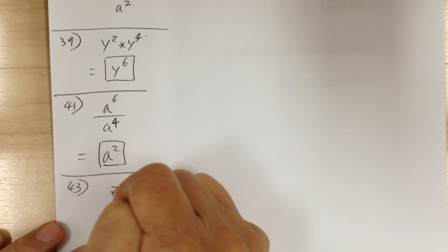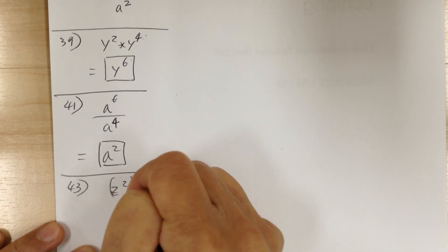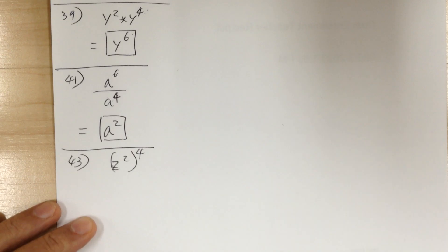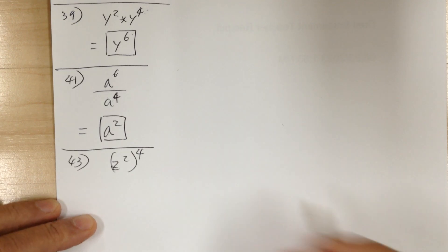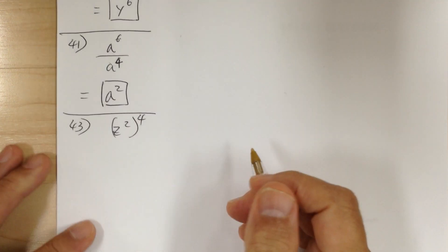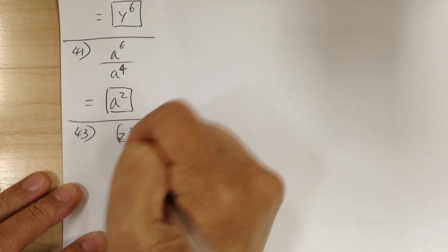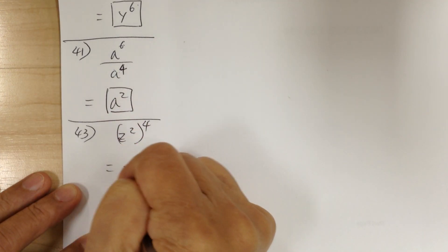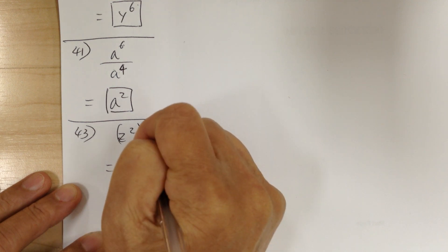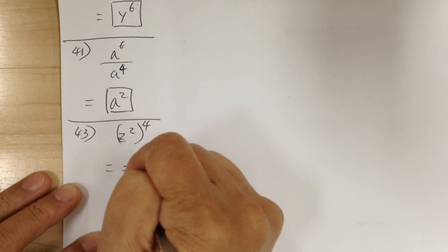You've got z squared to the 4 power. This is a power, so you use the power rule — exponent of exponent, you multiply. So it would be z to the 8, since 4 times 2 gives you 8.